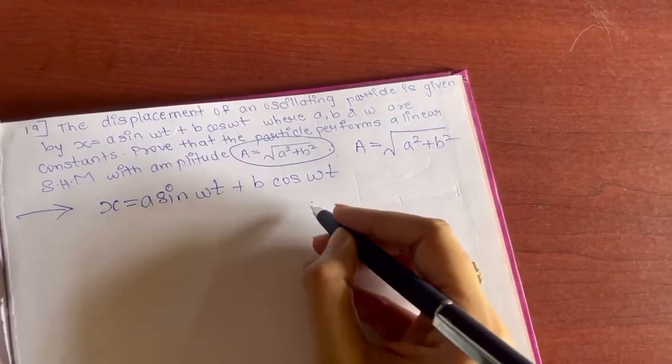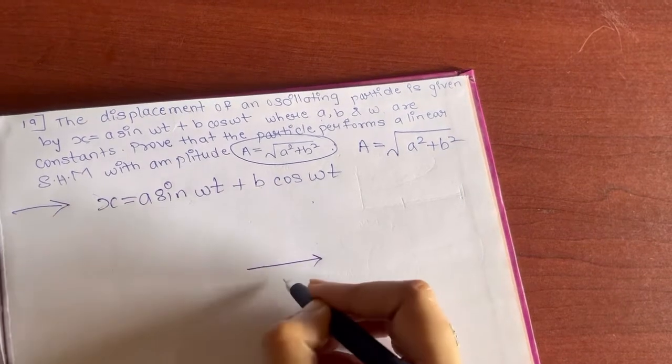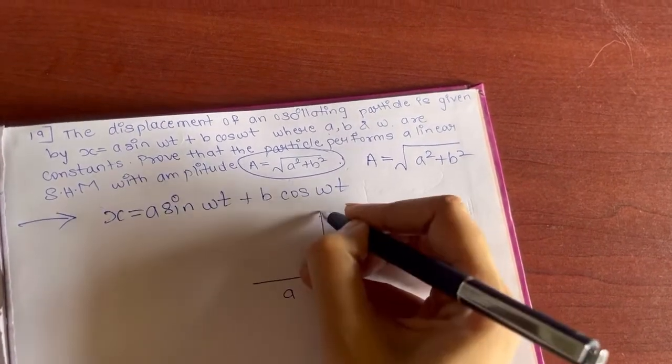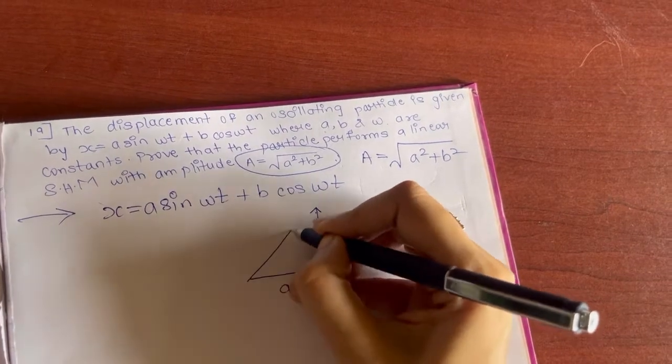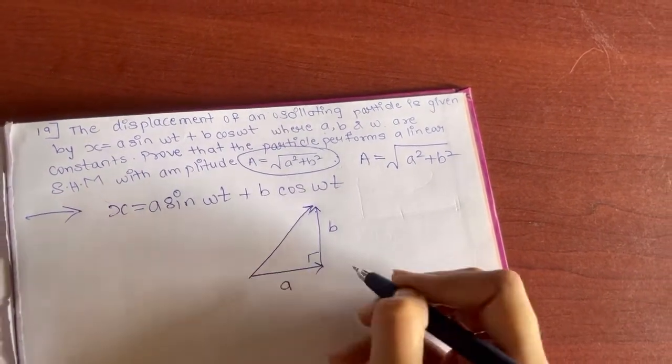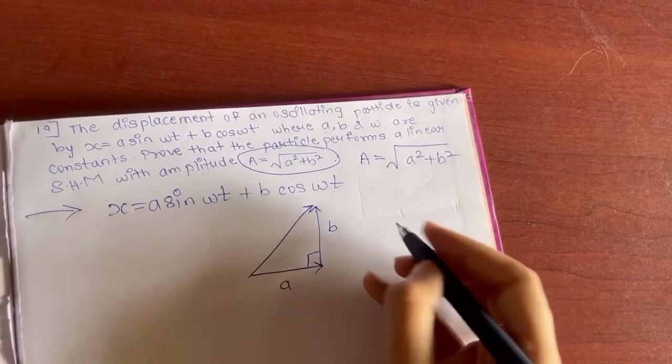It is very simple. Here you will directly go to trigonometry. If this is your a, this is your b, so what will be the value of this side? Of course this is 90, you can go by Pythagoras theorem.